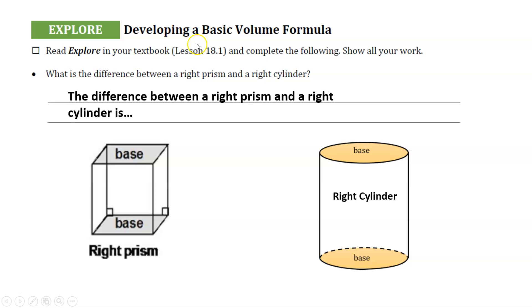So the first thing we're going to go over is to develop the basic volume formula. We're going to go over what the difference is between a right prism and a right cylinder. As you can see here, there's a picture of a right prism and a right cylinder. One thing I notice is that the base here is a four-sided shape, whereas the base here is a circle. One of the differences I notice is that the base is a quadrilateral, and this base is a circle.